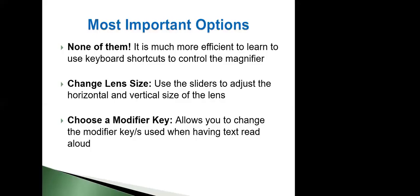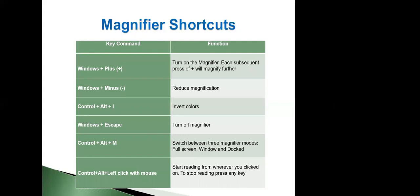I do have the shortcuts for the magnifier here in a table. Windows Plus will turn on the magnifier, and then every subsequent use of Windows Plus will zoom in. Windows Minus will zoom out and Windows Escape will turn off the magnifier. Control-Alt-I to invert the colors. Control-Alt-M to switch between magnifier modes. We can also use Control-Alt plus the first letter of the magnifier mode — for example, Control-Alt-F for full screen mode, Control-Alt-L for lens mode. And Control-Alt-Left-click will start to read from wherever we clicked.